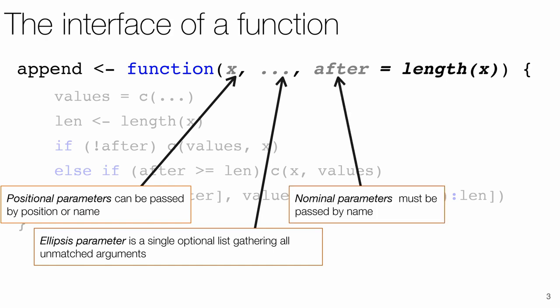After the dots, there can be other parameters. These, however, must be passed named. All parameters except the ellipsis may have a default value. This can be any expression and can even refer to the other parameters.